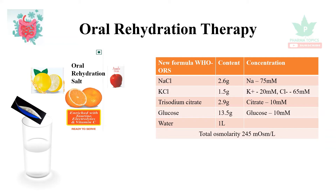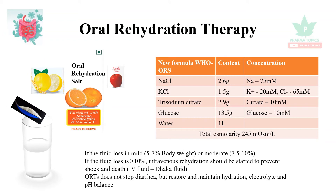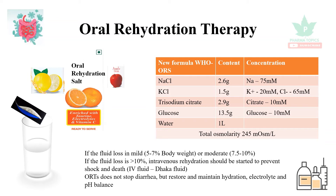The total osmolarity of the fluid is 245 milli-osmoles per liter. If fluid loss is mild to moderate — 5 to 7 percent of body weight — oral rehydration therapy is used. If fluid loss is greater than 10 percent, intravenous rehydration therapy should be started, typically with IV fluids.